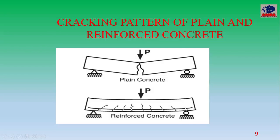Looking at the second figure — this shows the reinforcement and rebar. When the load causes bending, the reinforcement is present in the tension zone. It is not a sudden failure. Small cracks form gradually — these are fine cracks in the concrete. This is the failure pattern showing small cracks due to the reinforcement material present.